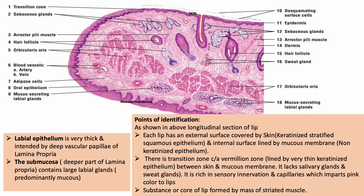Then the transition zone begins. There is a gradual transition from the epidermis and dermis of the skin. As we reach the labial epithelium, the epithelium becomes very thin and is indented by the vascular papillae of the lamina propria. Deep to it, in the submucosa, we have large mucus-secreting labial glands.